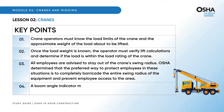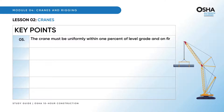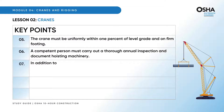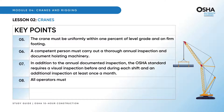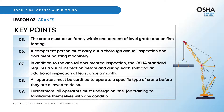A boom angle indicator must be located on the crane where it will be visible to the operator. The crane must be uniformly within one percent of level grade and on firm footing. A competent person must carry out a thorough annual inspection and document hoisting machinery. In addition to the annual documented inspection, the OSHA standard requires a visual inspection before and during each shift and an additional inspection at least once a month. All operators must be certified to operate a specific type of crane before they are allowed to do so, and must undergo on-the-job training to familiarize themselves with any conditions particular to the workplace.